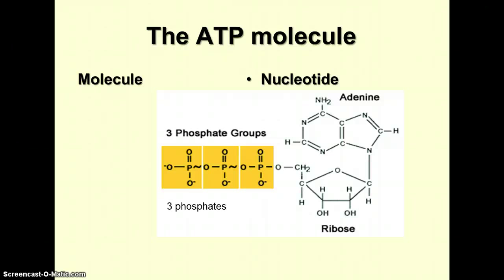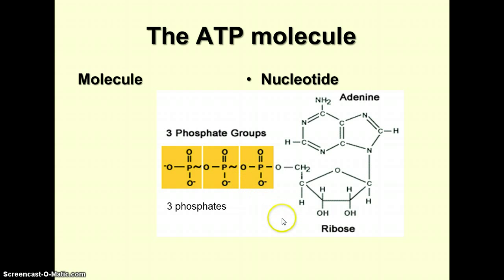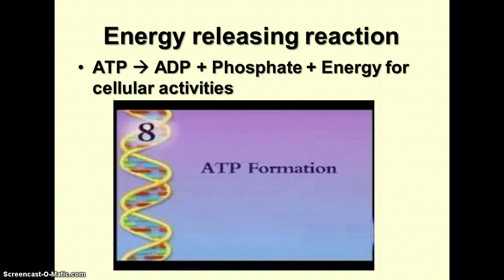Here's what the ATP molecule looks like. It's made of adenine — one of the nitrogen bases found in RNA and DNA — ribose sugar, which is the five-carbon sugar found in RNA, and three phosphate groups. If you take just one phosphate plus the ribose and the adenine, that makes an adenine nucleotide used in RNA. By adding two more phosphates, we're adding energy to the molecule. The wiggly lines represent the high-energy, unstable covalent bonds. The energy-releasing reaction takes ATP and produces ADP plus phosphate plus energy for cell activities.